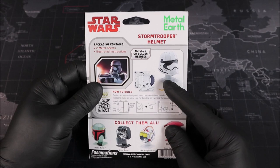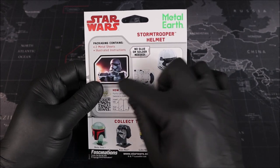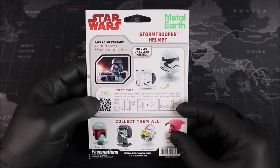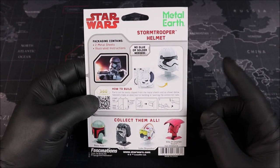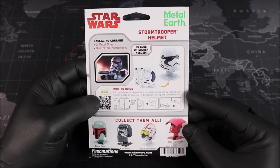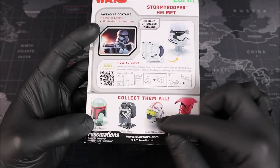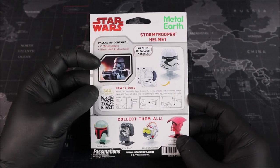On the back we get a brief look at our metal, followed by some instructions on how to build this build. Then, just to the left we have a QR code which we can scan to get a 360 view of our model if we need it while we're building. And then finally at the bottom we have a look at some other models in the series. Groovers, let's go ahead and open up our package.